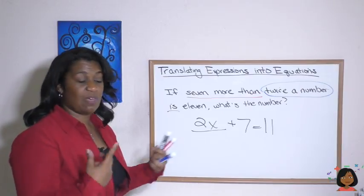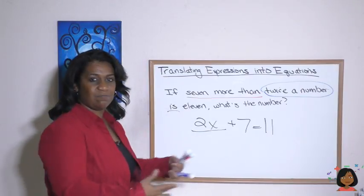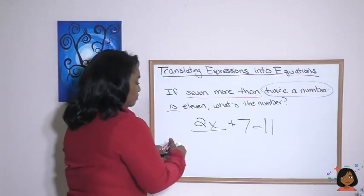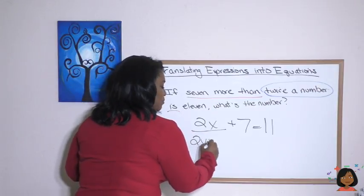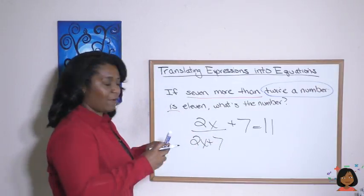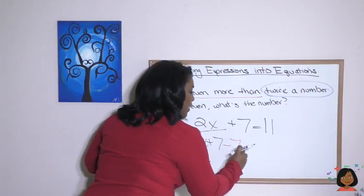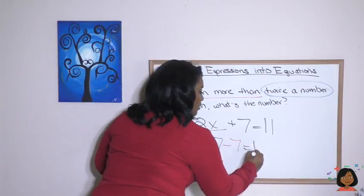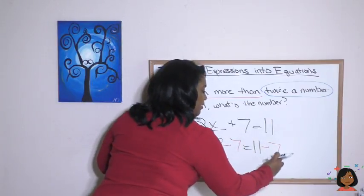So we always do the opposite. We have a plus seven. We're going to subtract seven. Let's do it. Two X plus seven minus seven equals 11 minus seven.